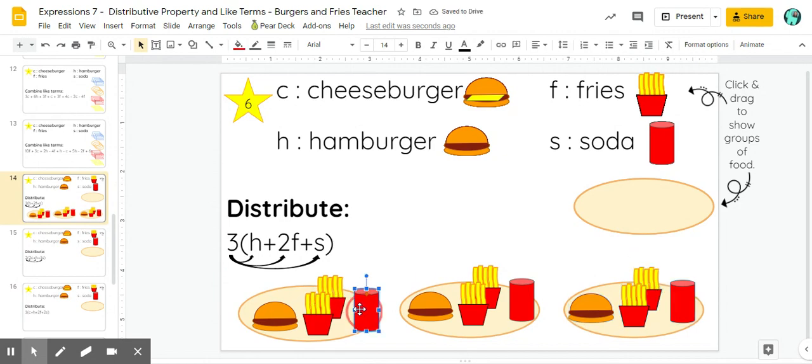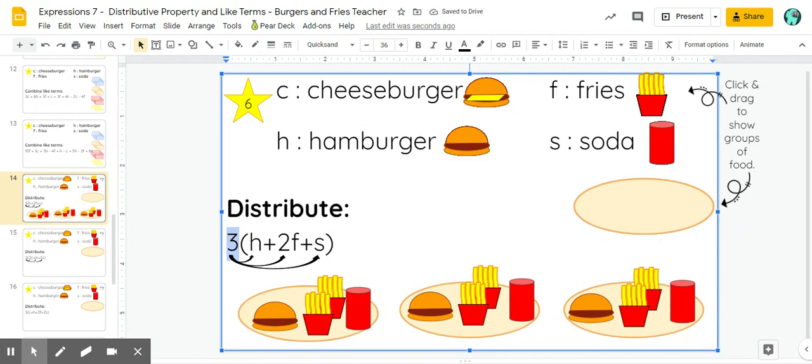So we'll just double check our picture. We have three tables or three groups. And every group or every table has a hamburger, two fries, and a soda. Let's count up what we have in all.